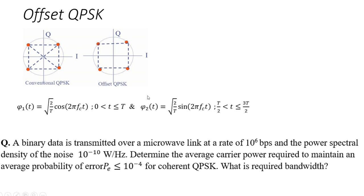If you shift the second carrier — the quadrature carrier — by one bit duration, where T/2 is the one bit duration, you will have Offset QPSK. The name 'offset' comes from the fact that the second carrier is phase shifted by one bit duration.